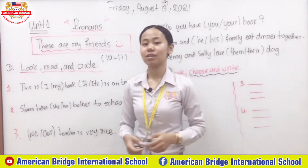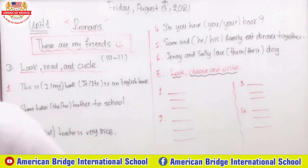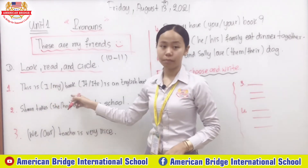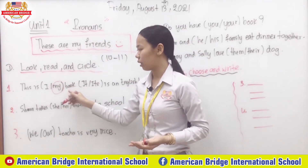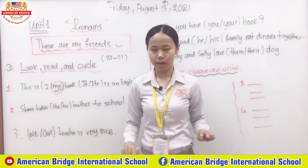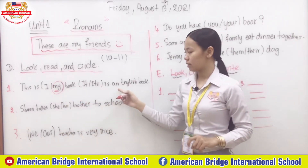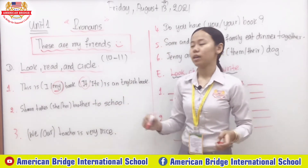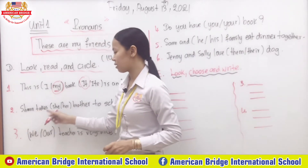Let's check the answers altogether. Number one — possessive adjective or subject pronoun? Very good, it's 'my book.' We use possessive adjective to express who owns something. 'My' means the book belongs to me. You cannot say 'this is I book' — that's not correct. We use 'my.' For the second part, 'it is an English book' — we use subject pronoun 'it.'